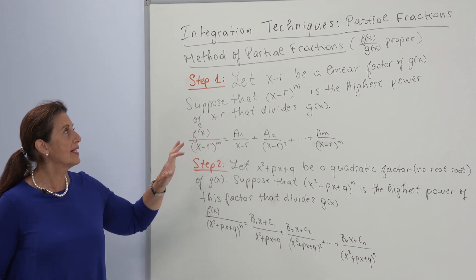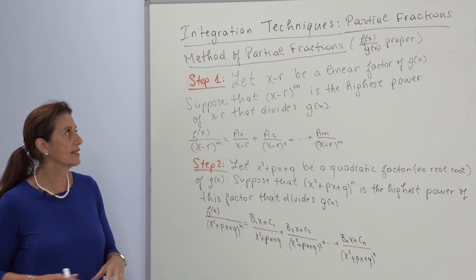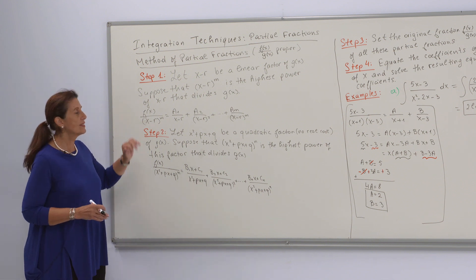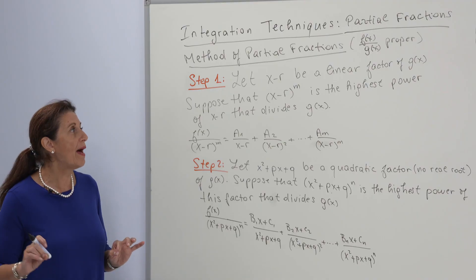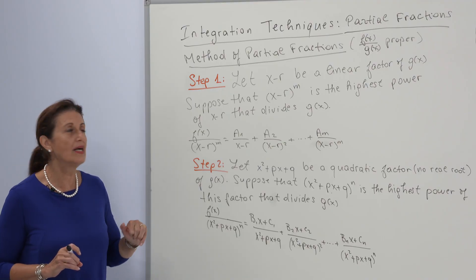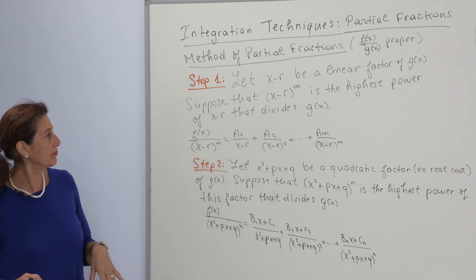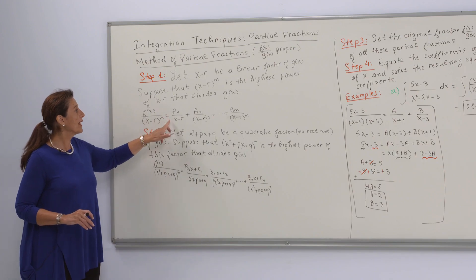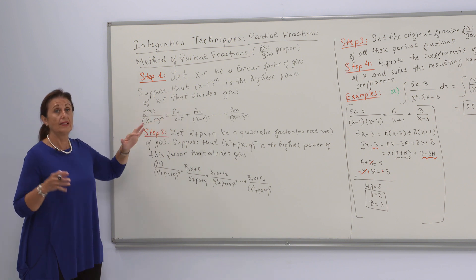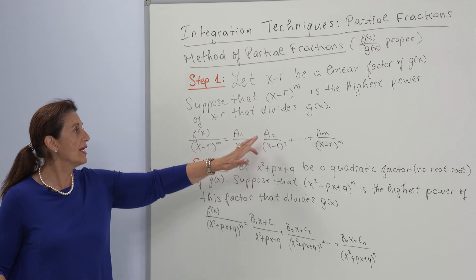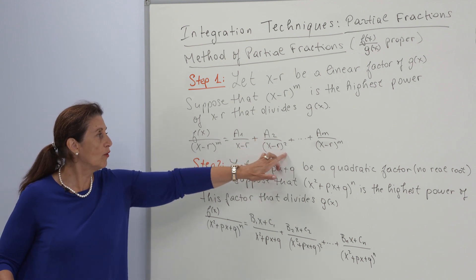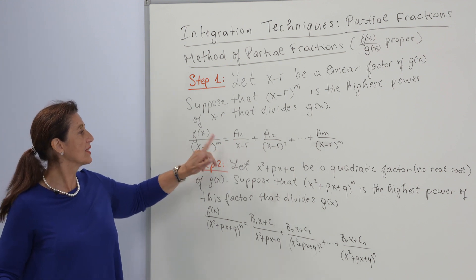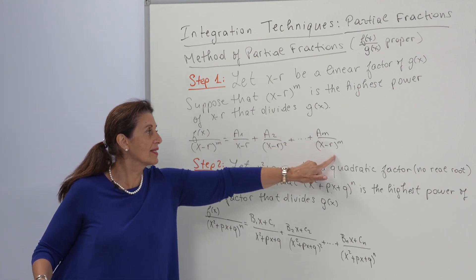Step one. Let x minus r, where r is a constant, be a linear factor of g of x — meaning it has a real root. Suppose that (x minus r) to the power m is the highest power of (x minus r) that divides g of x. Then f of x over (x minus r)^m equals a1 over (x minus r) plus a2 over (x minus r)^2 plus a3 over (x minus r)^3, and so on, until am over (x minus r)^m.